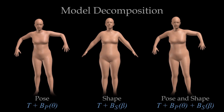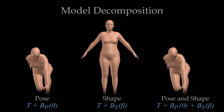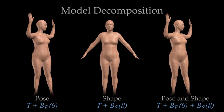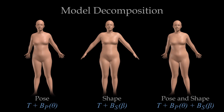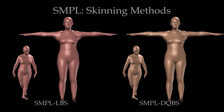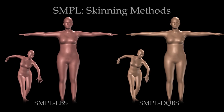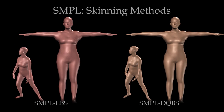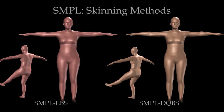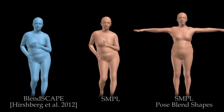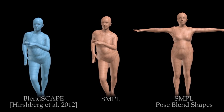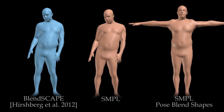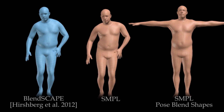SMPL allows the independent modification of pose and shape, similar to previous models like SCAPE which are based on triangle deformations. SMPL can be built using different skinning functions. We train SMPL models using linear blend skinning, shown on the left, and dual quaternion blend skinning, shown on the right. SMPL is more accurate than a blend SCAPE model trained from exactly the same data. Since SCAPE models are based on triangle deformations rather than skinning, they are incompatible with existing animation systems.